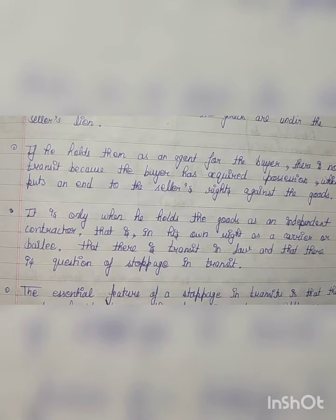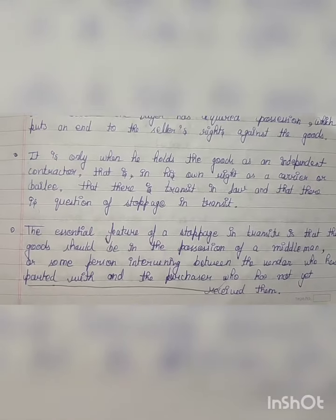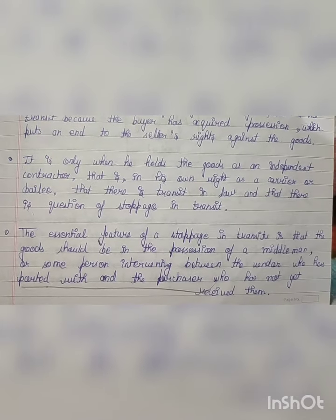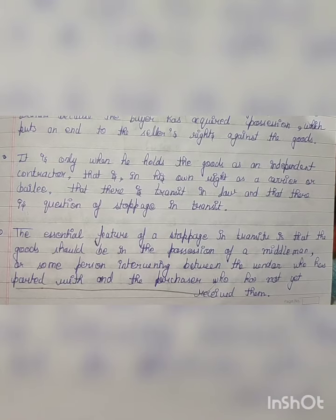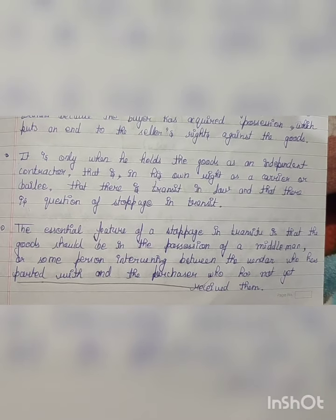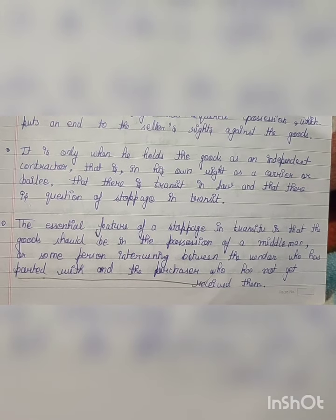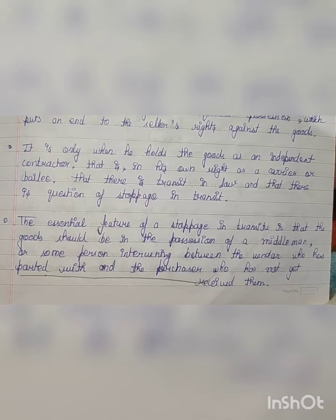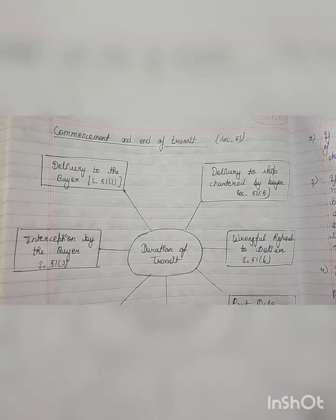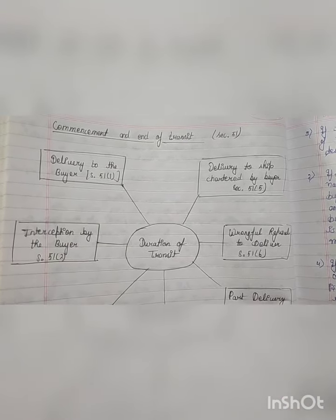The essential feature of a stoppage in transit is that the goods should be in the possession of a middleman, or some person intervening between the vendor who has parted with them and the purchaser who has not yet received them. In the next video we will study Section 51: Commencement and End of Transit.